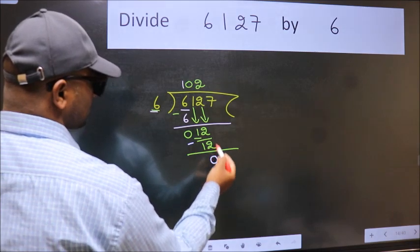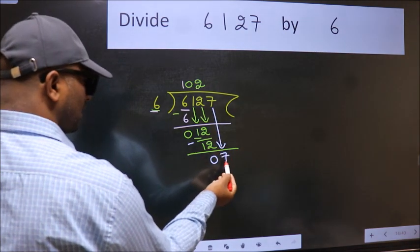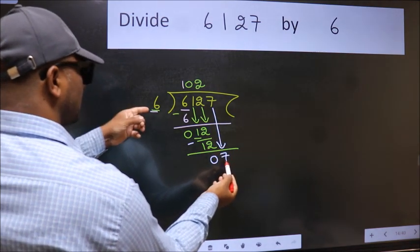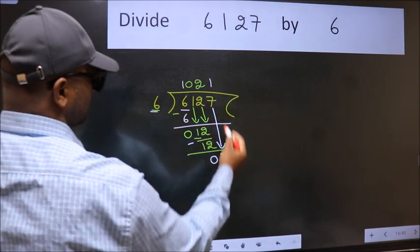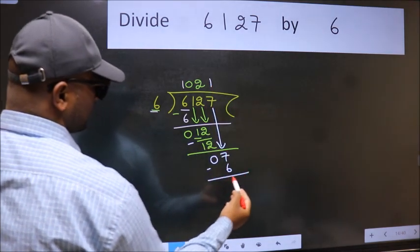After this, bring down the beside number. So 7 down. A number close to 7 in 6 table is 6 once, 6. Now we subtract. We get 1.